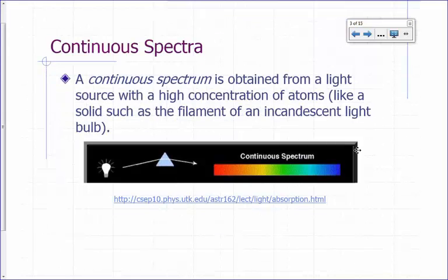Now, if you were to get light from a source that has a high concentration of atoms, like a filament from an incandescent bulb, and you run it through a prism, you get what's called a continuous spectrum. You get a continuous band of colors. So something like this would be an example of a continuous spectrum.